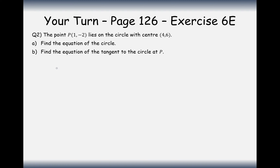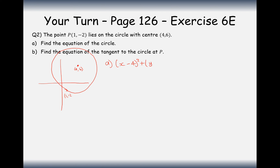Let's draw a sketch: the centre is at (4, 6) and the point (1, -2) lies on the circumference. The equation will look like (x - 4)² + (y - 6)² = r². To find the radius, the horizontal movement is 3 and the vertical movement is 8, so r² = 3² + 8² = 9 + 81 = 90. So the equation of the circle is (x - 4)² + (y - 6)² = 90.